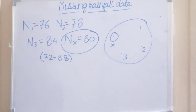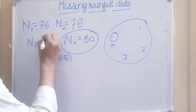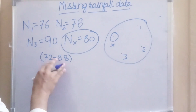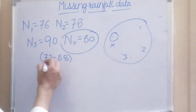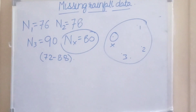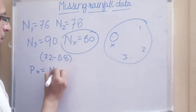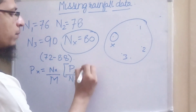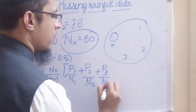Now let us change the scenario a little bit. Suppose at station 3 the normal rainfall is 90 mm instead. This normal rainfall of 90 is not within 10 percent of Nx, since it is outside the range of 72 to 88. So we cannot use the simple averaging formula and we have to use the normal ratio method: Px = (Nx / m)(P1/N1 + P2/N2 + P3/N3).